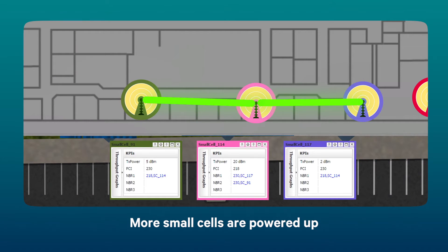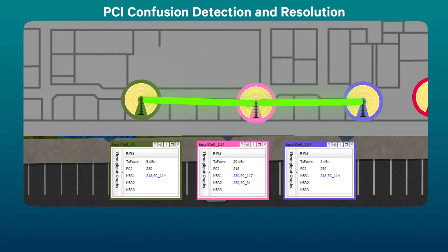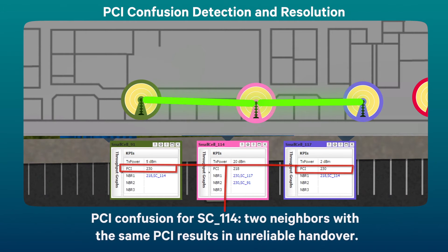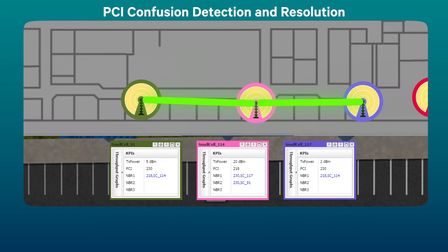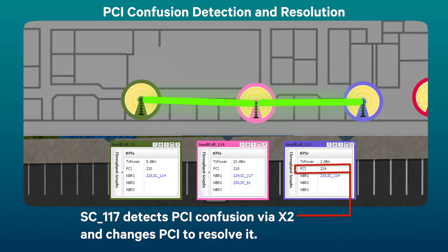As more small cells are installed, two small cells neighboring small cell 114 happen to select the same PCI. This creates PCI confusion, which can lead to handover problems. Small cell 117 detected PCI confusion via X2 and changed its PCI value.